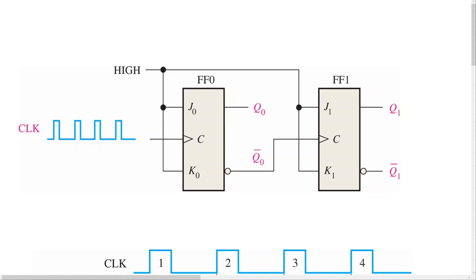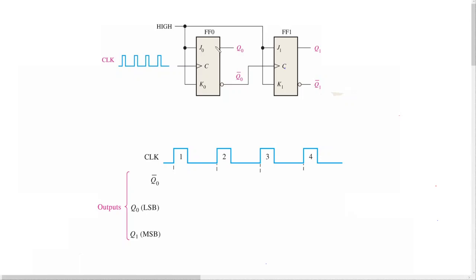Let us quickly look at and discuss the timing diagram for this specific counter. Both flip-flops are connected in the toggle mode — their J's and K's are both connected to high, which puts them in toggle mode. We initially assume the counter is in the reset state, which means Q0 and Q1 both have the value of 0. We also know that these flip-flops are positive edge-triggered — there is no bubble indicated on the clock input, which confirms it is a positive edge-triggered flip-flop.